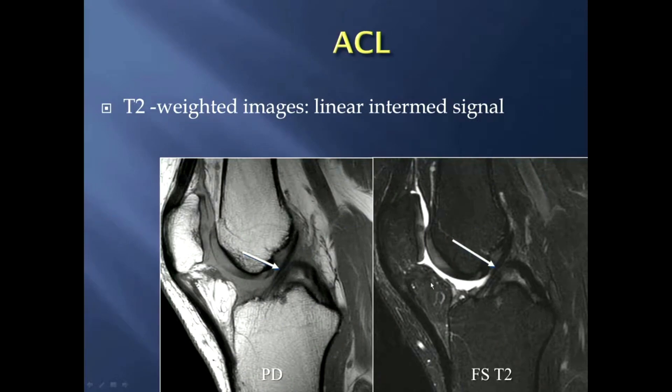Here's a different patient with a proton density-weighted sagittal MR image and a T2-weighted image, and you can still see a little bit of the striations in a normal anterior cruciate ligament.